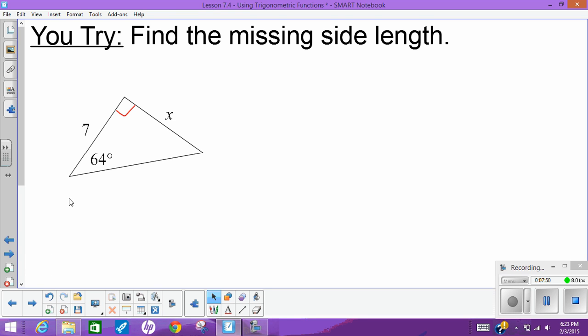So go ahead and use that information here to try and find x in this right triangle. I highly recommend labeling your sides - opposite, adjacent, and hypotenuse - and choose the function that uses the two sides you have labeled, so if you want to choose the two sides that are x and 7.